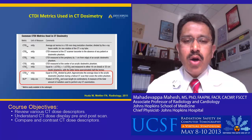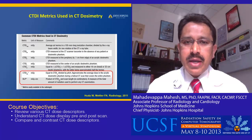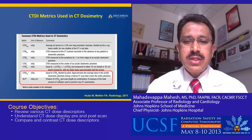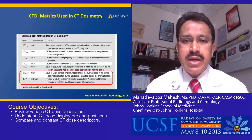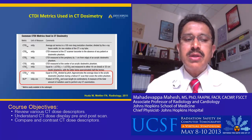These are the common CTDI dose metrics used in CT dosimetry. However, as of now, the key dose descriptors are confined to the last two: CTDIvol, which has a unit of milligray, and DLP, the dose length product, which has a unit of milligray-centimeter.